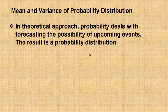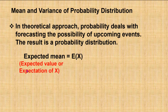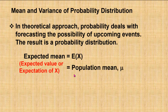From the probability distribution, we can find the mean value. This mean value is the value that we expect to happen in the long term, so we call it the expected mean, or expected value, or expectation of X. The notation of the expected mean is E(X). This expected value is the population mean of the distribution, which is denoted as mu.